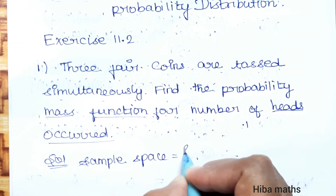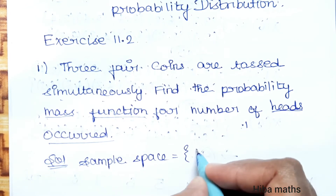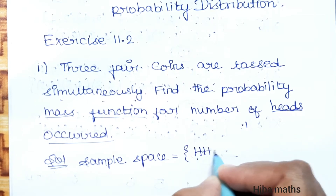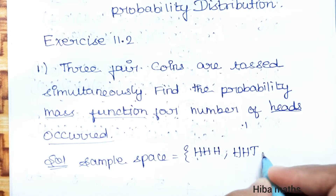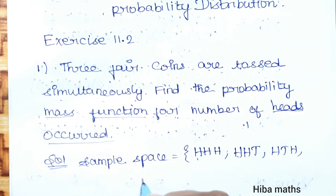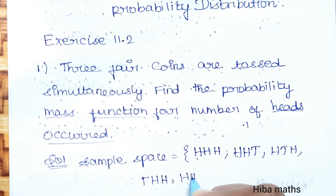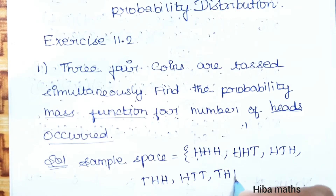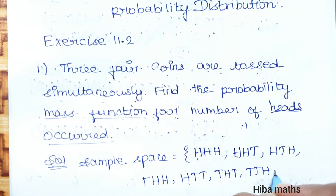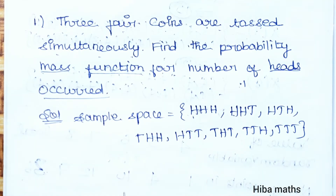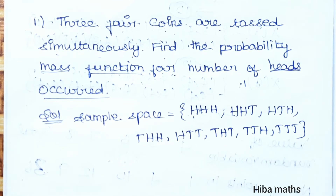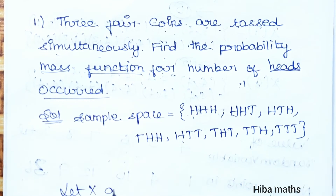For three coin tosses, the sample space outcomes are: HHH, HHT, HTH, HTT, THH, THT, TTH, TTT — so 8 outcomes in total. Now we find the probability mass function for the number of heads occurred.